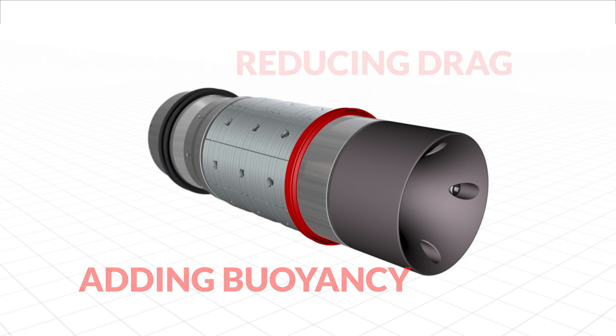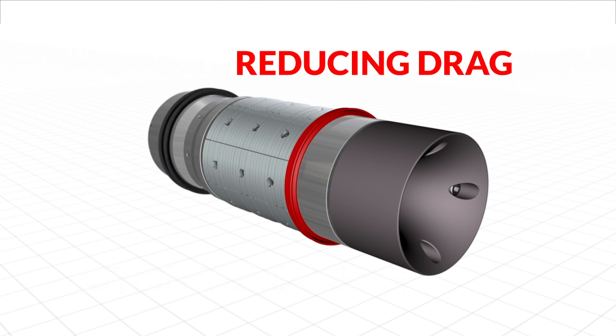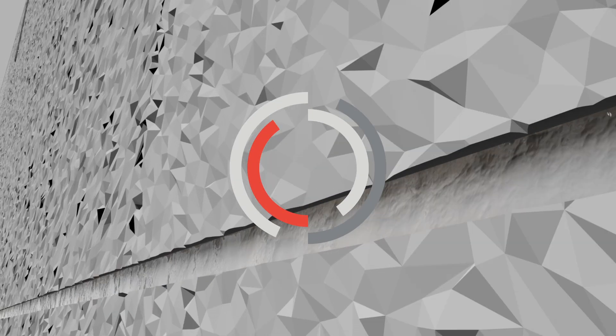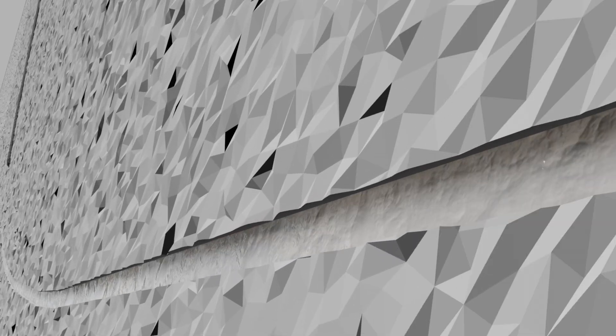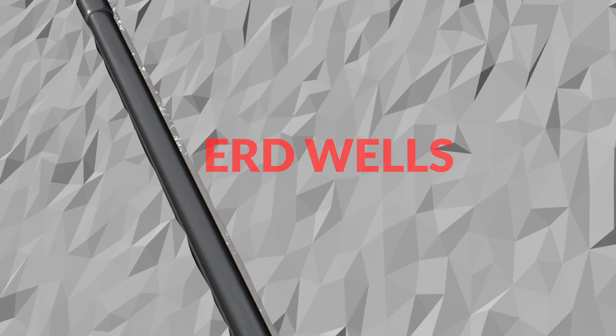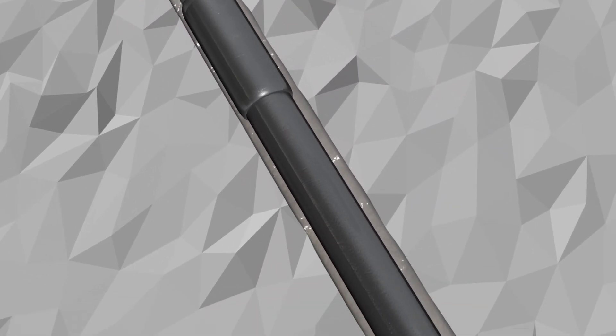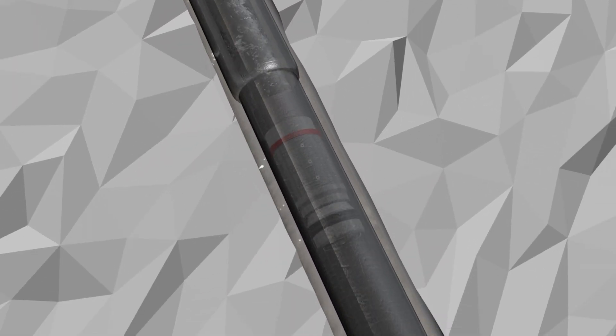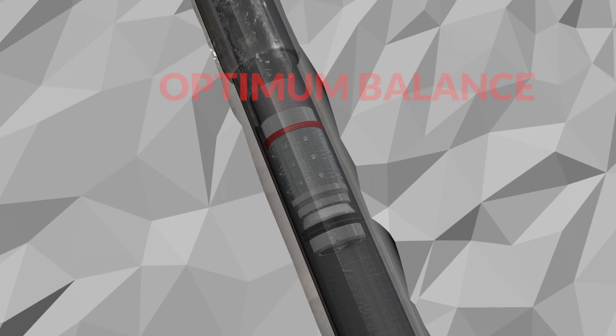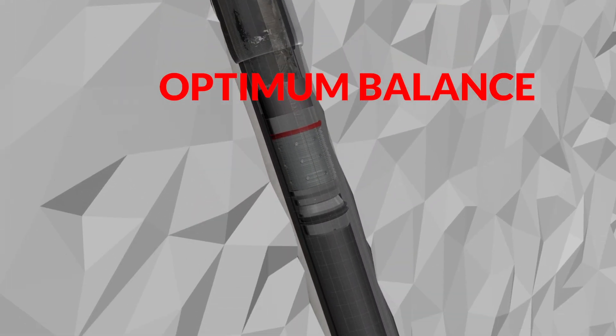The Self Lock Flotation Device reduces lateral string weight and the associated drag forces to help drive the liner section to target depth. This is particularly advantageous when floating liners across long lateral runs in unconventional ERD wells of the kind commonly found in the US land market.